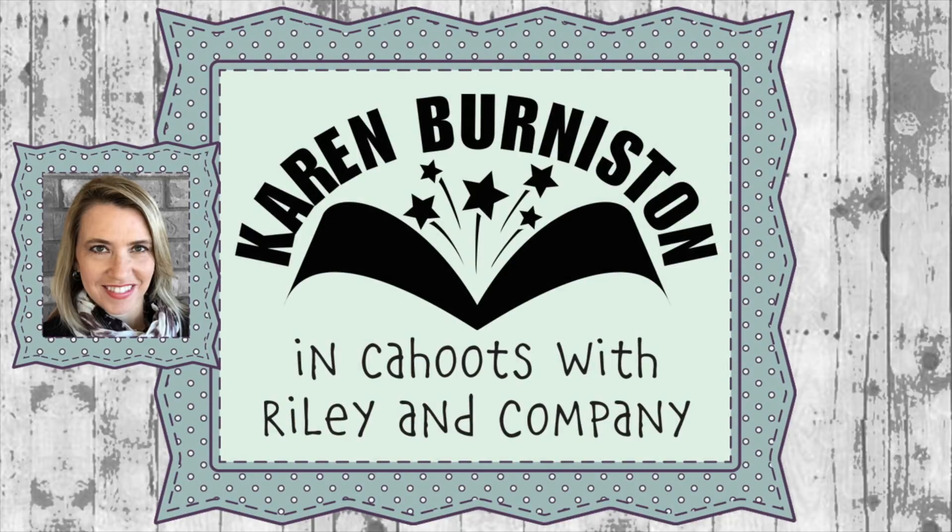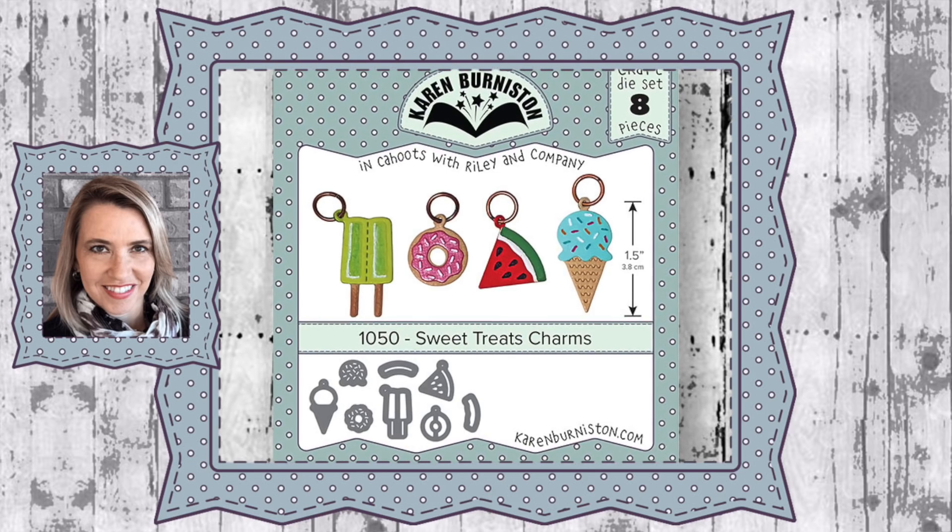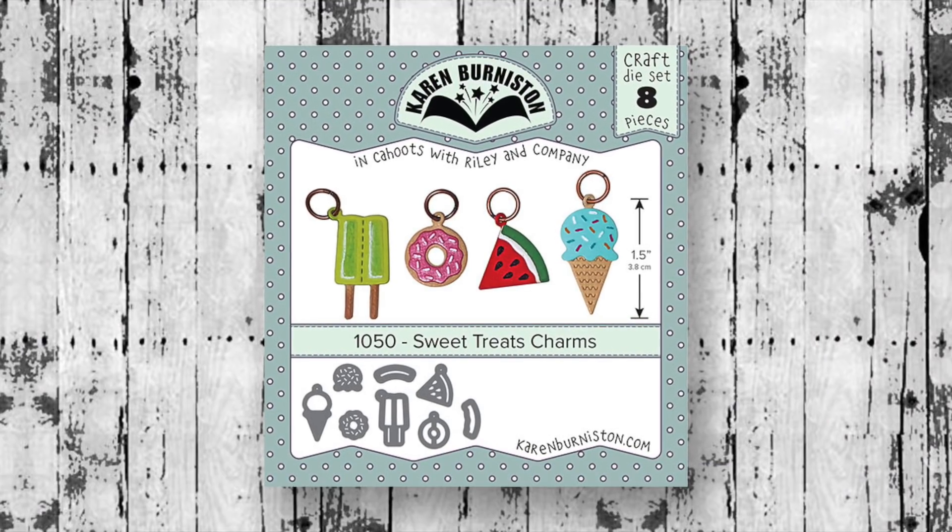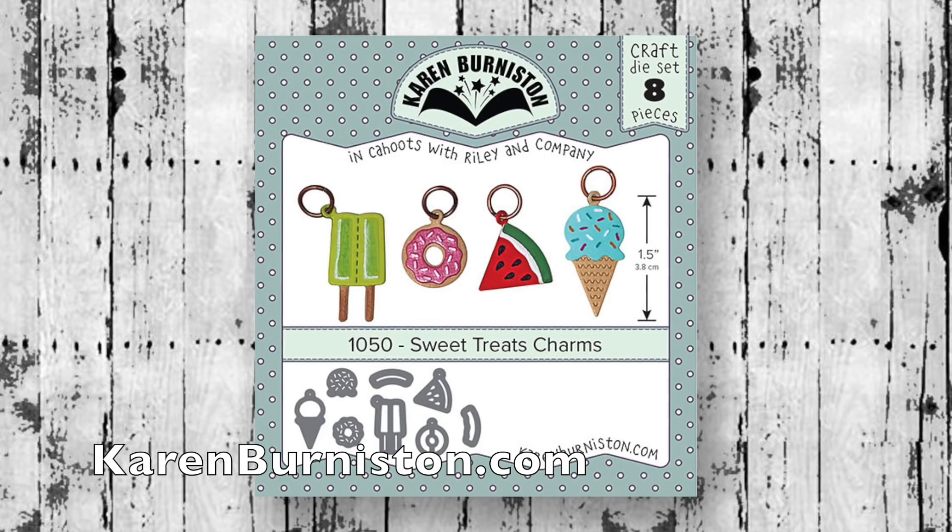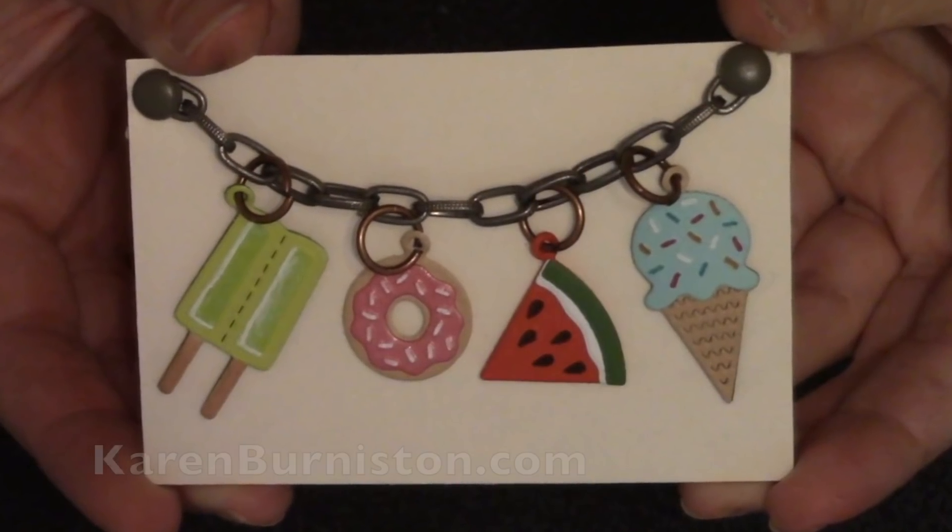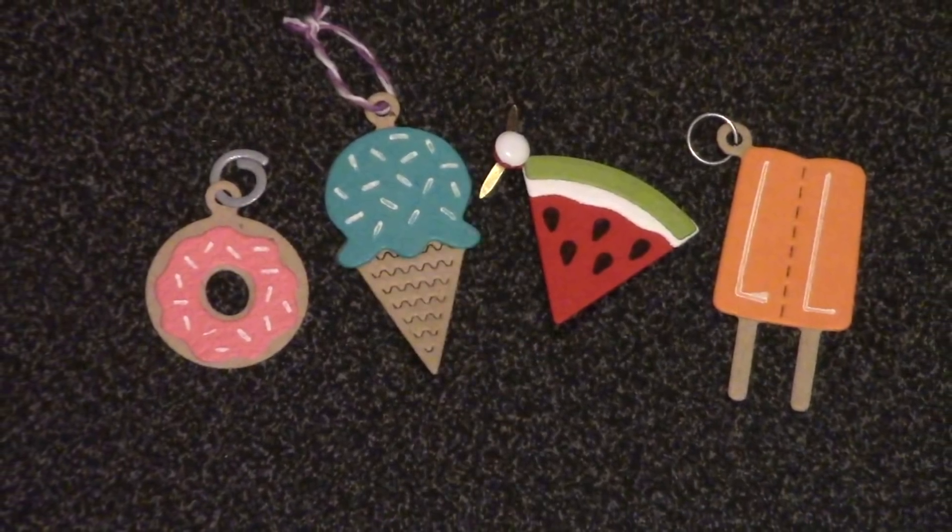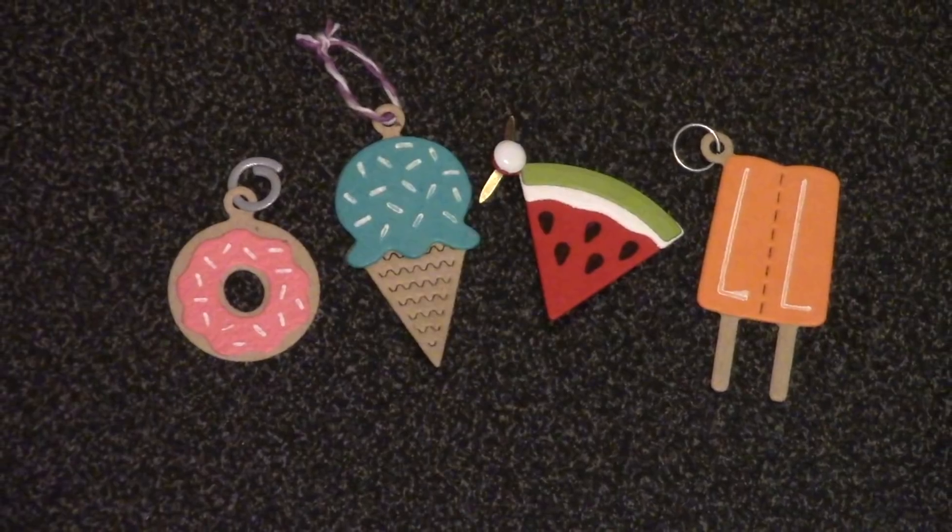Hello, it's Karen Burniston here with an assembly video for one of our die sets. This is die number 1050, the Sweet Treats Charms, and you can check out all of our designs at KarenBurniston.com. You can make four adorable little charms using this die set: a donut, an ice cream cone, a watermelon slice, and a popsicle.